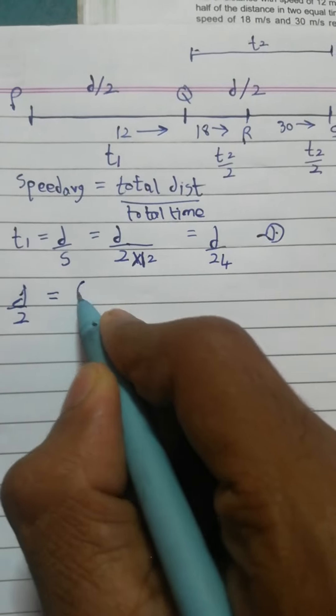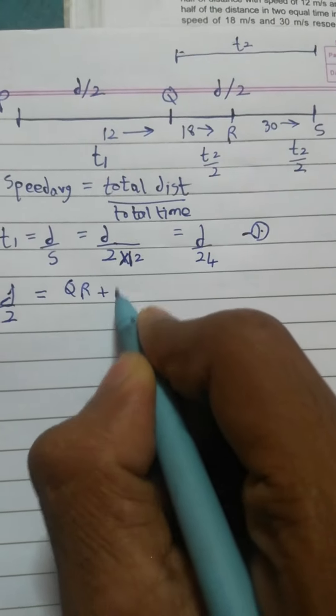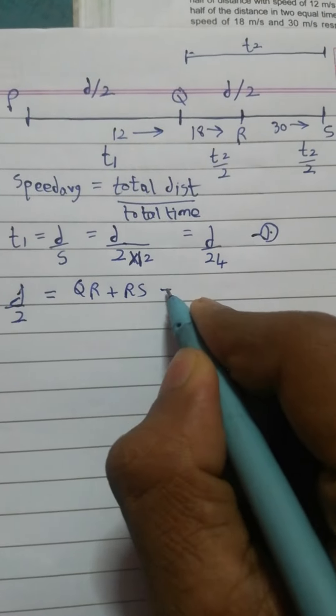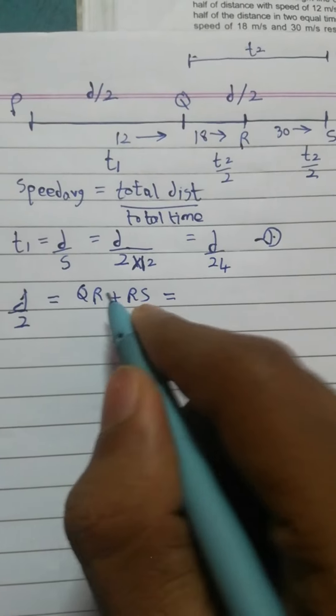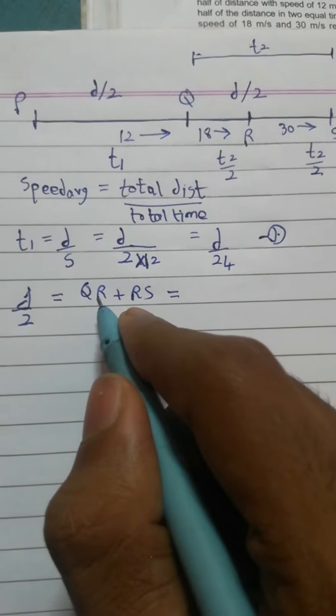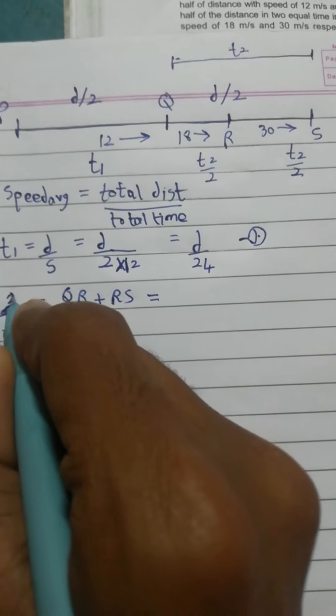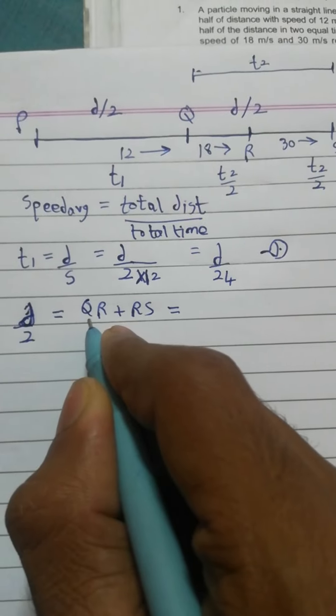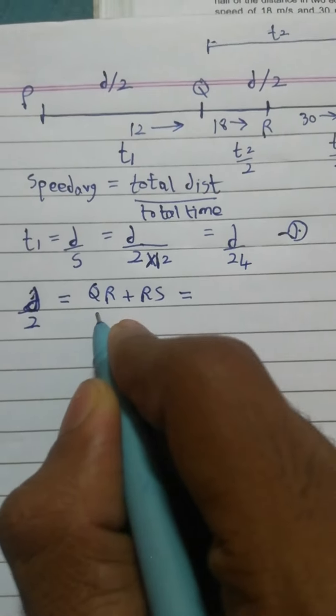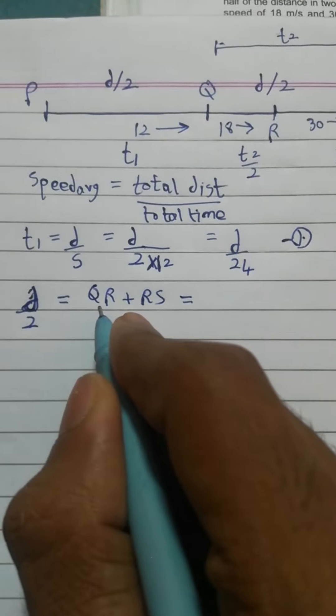Which is equal to - so now what is QR? So we know we have to use here S equal to Ut plus half At square. So to find QR we need to use Ut plus half At square, and acceleration is 0.